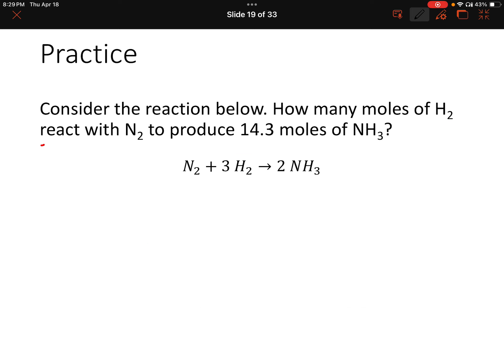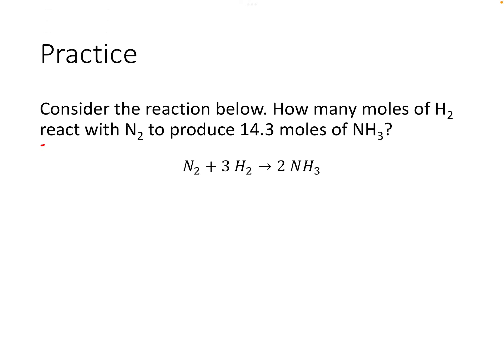Let's look at another problem with a slightly different reaction. Consider nitrogen reacting with three moles of hydrogen to produce two moles of NH₃, also called ammonia — a really strong base or cleaning agent; always wear gloves if you're going to use it. We're asked how many moles of hydrogen react with nitrogen to produce 14.3 moles of ammonia.